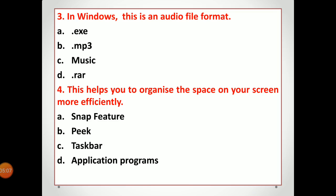Third question: the audio file format. All music files always have the format .mp3. The option .exe is the format for software — any application you install has the .exe format, meaning executable files. 'Music' is not a format, it is a type. And .rar is a compressed archive format. So the answer to the third question is B — .mp3.